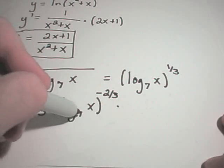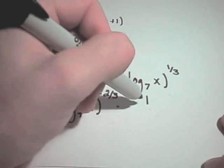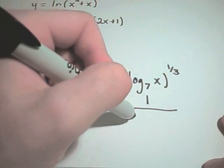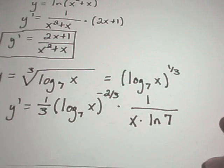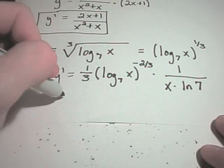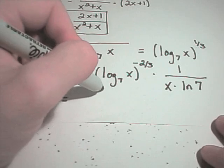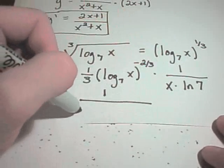Well, the derivative of log base 7 of x, using one of our basic formulas we saw, you'll get 1 over x. Then you have to tack on the natural logarithm of the base. You could rewrite this as 1 over 3.